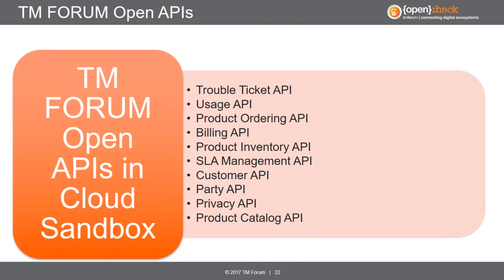Let's talk about TM Forum Open APIs. We'll run a number of TM Forum Open APIs in our cloud sandbox, including trouble ticket, usage, product ordering, billing, product inventory, service level agreement management, customer management API, party management API, privacy API, and product catalog API. As a developer, you'll be able to create a trouble ticket, retrieve the trouble ticket associated with a specific customer that you would have created using our customer API. You could use the party API to model an individual and add profiles to the party.